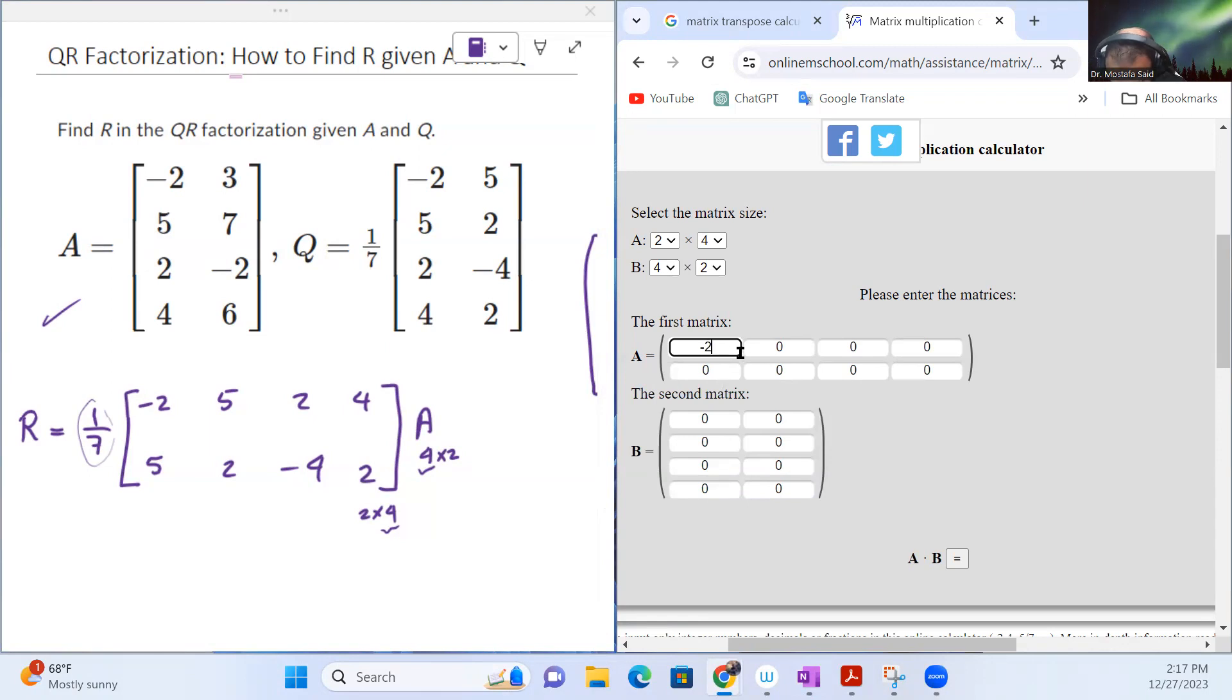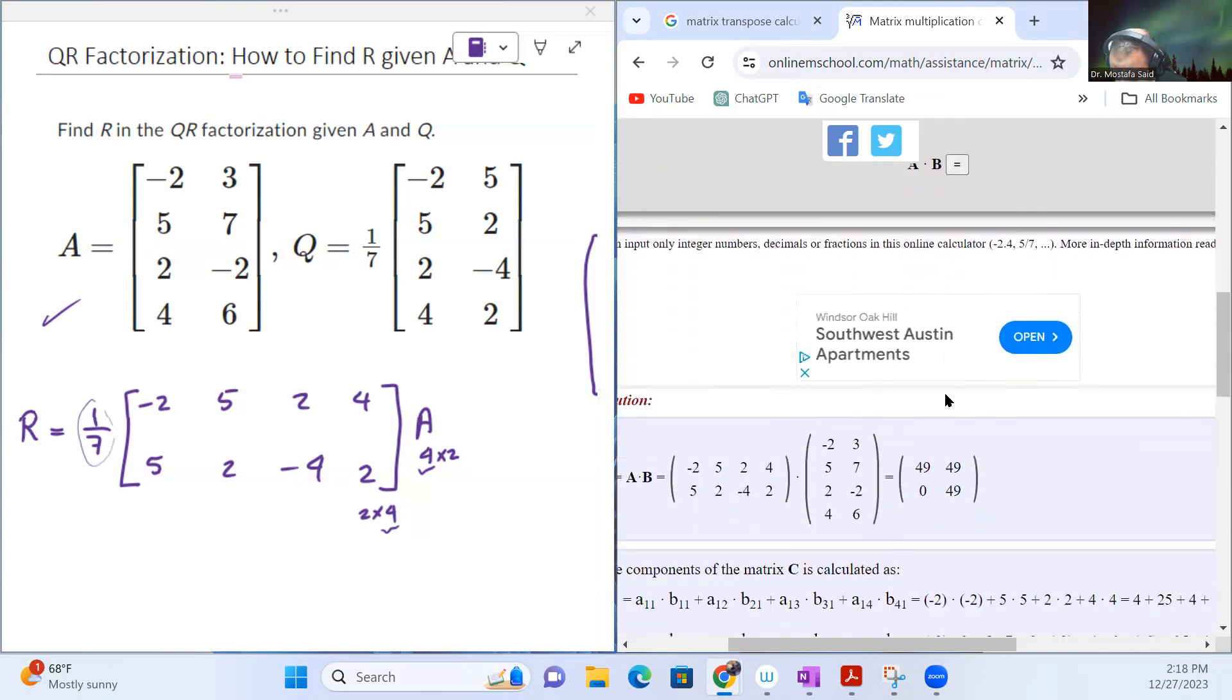Let's fill the amounts. So minus 2, 5, 2, 4, 5, 2, 4, minus 4, 2. So check: 2, 5, 2, 4, 5, 2, 2. Now let's do A: minus 2, 3, 5, 7, 2, 2, minus 2 - I might have a mistake. Check: 4, 6. Let's check that. So minus 2, 3, 5, 7, 2, minus 2, 4, 6. That's very okay. Now let's multiply them together.